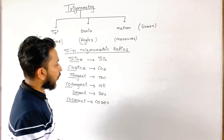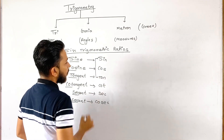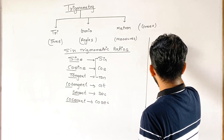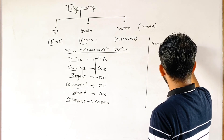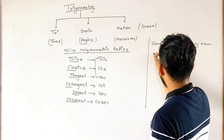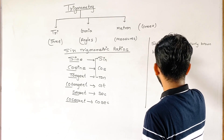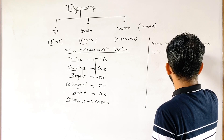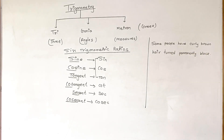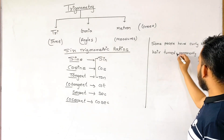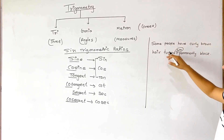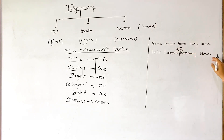To write the formula for the first three trigonometric ratios, we use the mnemonic sentence: 'Some People Have Curly Brown Hair, Ton, Permanently Black.' This helps remember that sine equals perpendicular over hypotenuse, cosine equals base over hypotenuse, and tangent equals perpendicular over base.